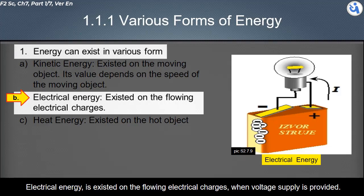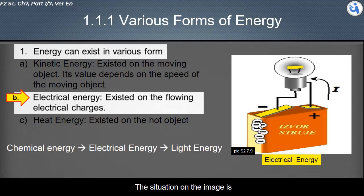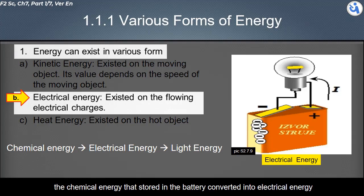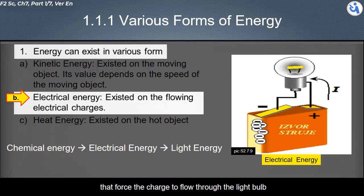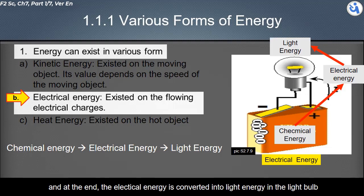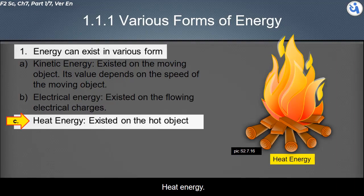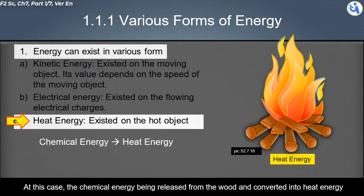The second form of energy is electrical energy. Electrical energy exists in flowing electrical charges. When a voltage supply is provided, the chemical energy stored in a battery is converted into electrical energy, which forces charges to flow through the light bulb, and the electrical energy is then converted into light energy. Heat energy exists on hot objects — for example, chemical energy released from burning wood is converted into heat energy.